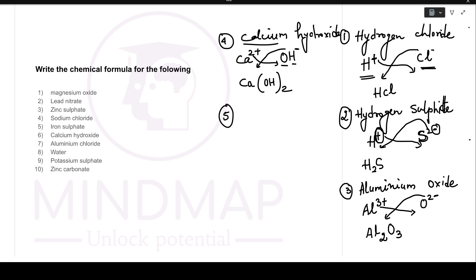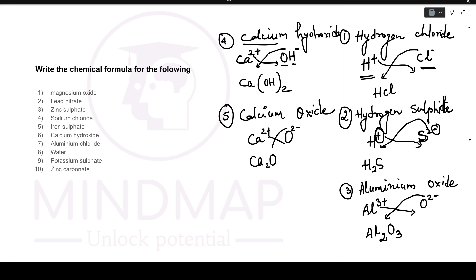Next, calcium oxide. Calcium is Ca2+ and oxide is O2-. Both numbers are the same — 2 and 2 — so they exchange and cancel, giving us CaO.